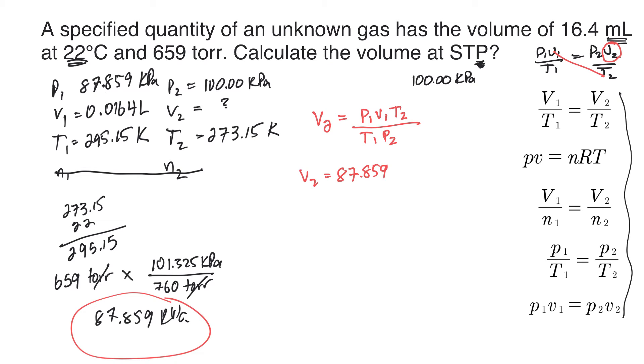And that is kilopascals times volume 1, 0.0164 liters, times temperature 2, 273.15 Kelvin. Divide, I'll put in brackets, temperature 1, 295.15 Kelvin, times P2, 100 kilopascals. That's what STP is. Okay. So that number that I have times 0.0164 times 273.15 divided by bracket, don't forget your bracket, 295.15 times 100, close the bracket, go.